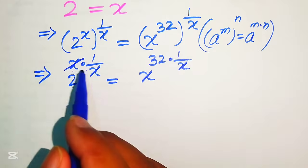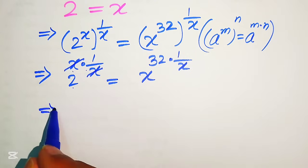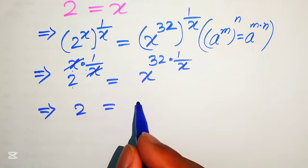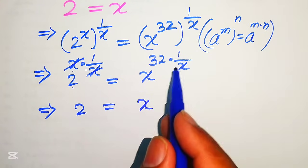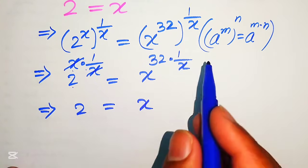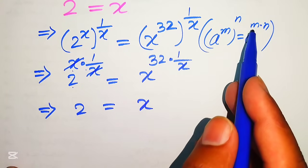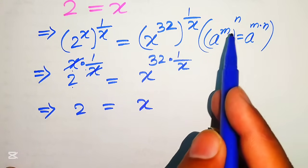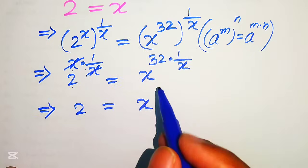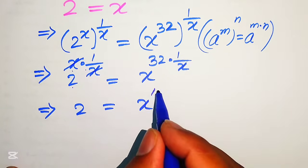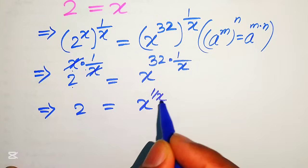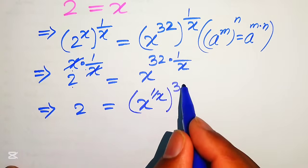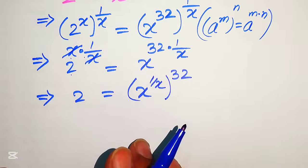This x and x cancel out, and we get 2 equals — moving 1 over x inside the term according to the rule that if you have m multiplied by n you can move m inside — so 1 over x moved inside becomes x to the power of 1 over x, and we have 32 only on the right hand side.